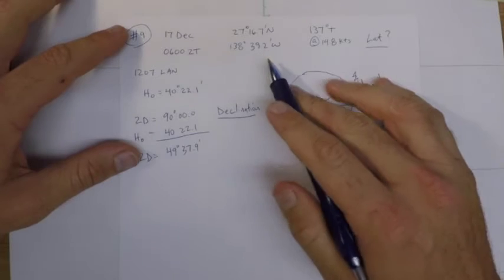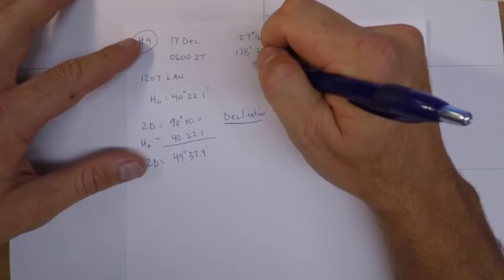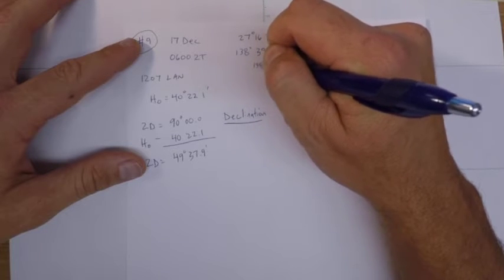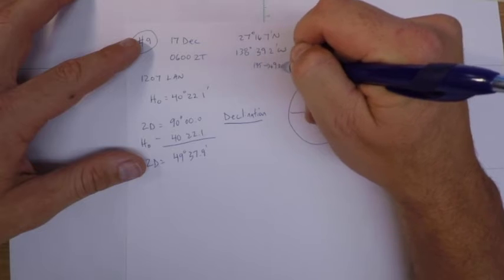But we do need to find out when we actually made this observation. And so if we're at 138 degrees west, the closest value for standard meridian is 135, which corresponds to plus 9 for a zone descriptor.